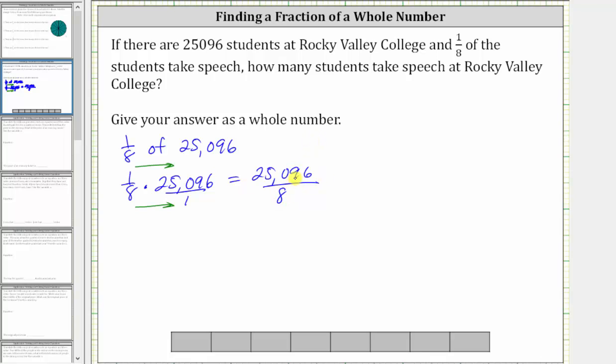A fraction bar means division, and therefore to find one-eighth of 25,096, we need to find this quotient, which is 25,096 divided by eight. Let's do this by performing long division.